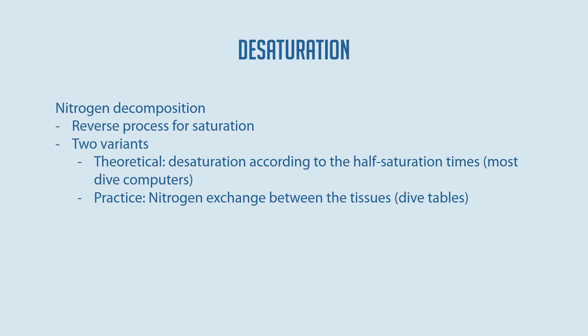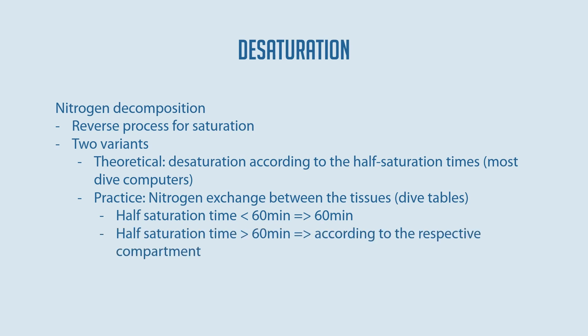In practice, these compartments — really, tissues — cannot be considered separately from each other but must be considered as a whole body. According to this, there is a gas exchange between individual tissues during desaturation, which is why fast tissues absorb nitrogen from the surrounding slower tissues and thus break down nitrogen more slowly than their half-saturation time would suggest. This assumption is followed by standard immersion tables: fast compartments during desaturation are treated as 60-minute compartments, while slower compartments retain their half-saturation times.